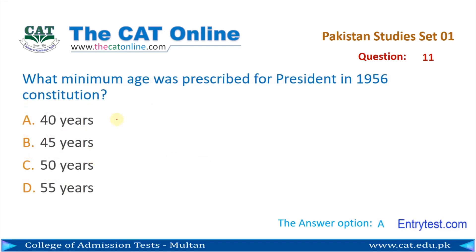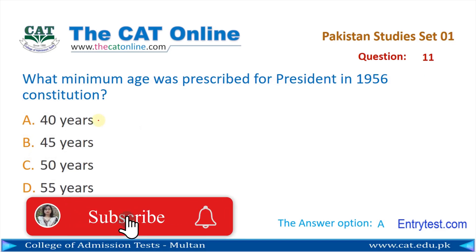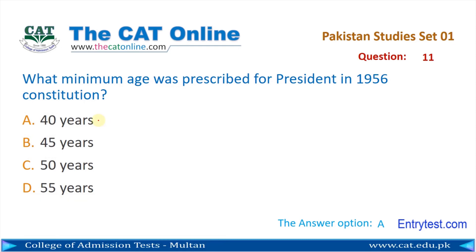Question number 11: What minimum age was prescribed for the president in the 1956 constitution? 1956 کے آئین میں صدر کی کم از کم عمر کی حد کیا تہین کیا گیا? The correct answer is A — 40 years.